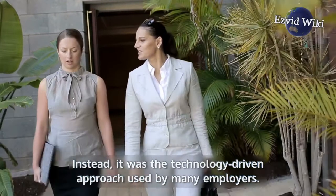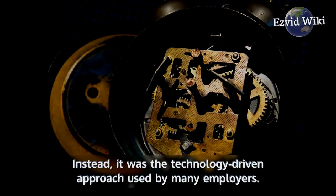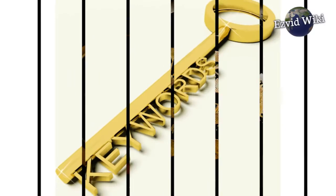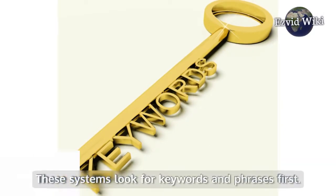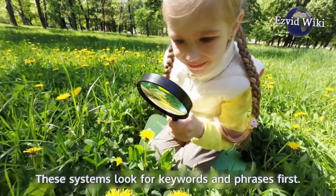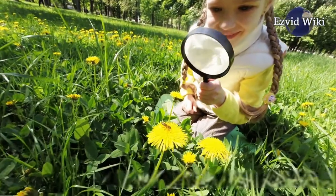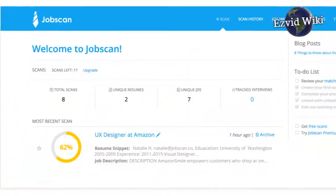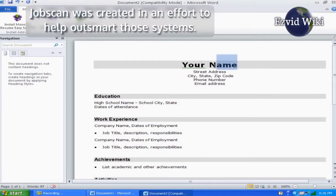Companies are increasingly using automated systems to sort through resumes. These systems look for keywords and phrases first. That means that companies don't focus on the experience and personality of the applicant. Jobscan was created in an effort to help outsmart those systems.